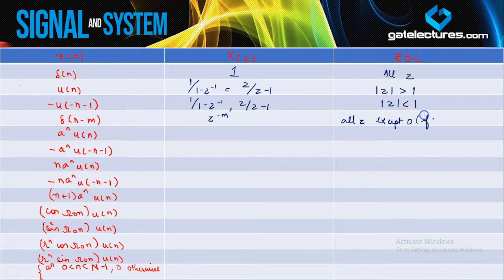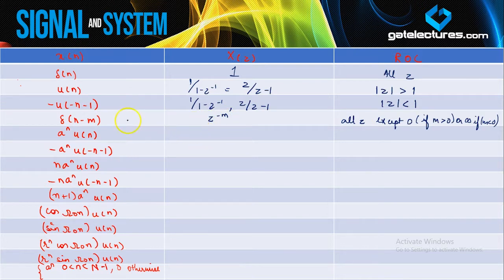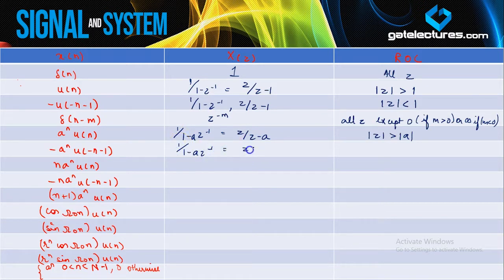The ROC for δ(n−m) is all z except 0, because if m>0 then z cannot be 0, since 0^(−m) is not defined. If m is negative, z cannot be infinity. So whenever you shift a signal by m, the Z-transform is multiplied by z^{−m}. For a^n u(n), the Z-transform is 1/(1−az^{−1}) or z/(z−a) with ROC |z|>|a|. The same expression applies for the anti-causal version, but with ROC |z|<|a|.